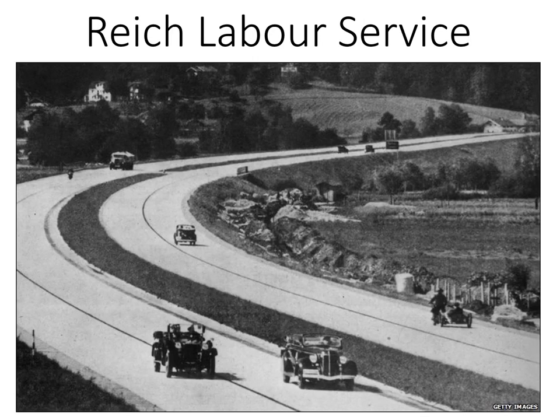The Reich's Labour Service was designed entirely to remove unemployment, and it did so by creating huge employment opportunities on big state projects. One of the things the Nazis did significantly in the 1930s was build Autobahn — motorways. You can see one of the first motorways created in Germany in this picture. The Reich's Labour Service employed thousands of people to build things like these motorways. Good — it reduced unemployment. However, all those in the Reich's Labour Service also had to face extra political indoctrination: they had to listen to lectures and attend rallies.